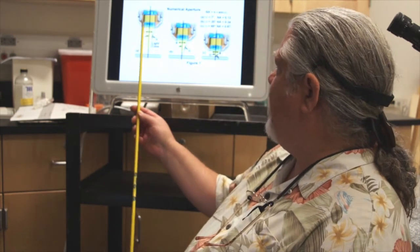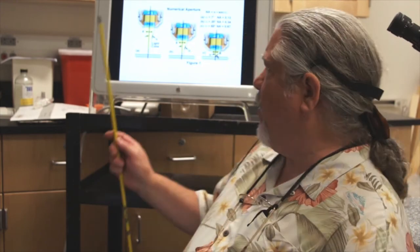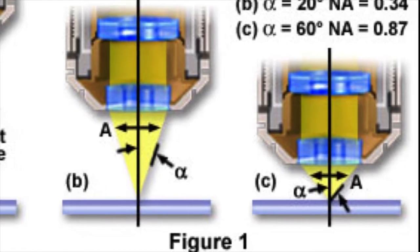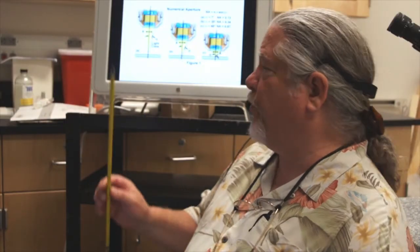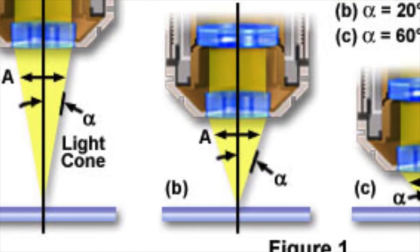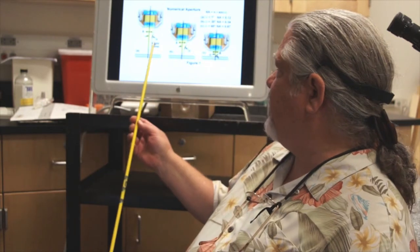Here we have three different objectives displayed on the screen. These are all the same magnification objective, but they all have improving numerical aperture. Notice that as the numerical aperture of the objective improves, the working distance is decreased. When you're working with a very high NA, high numerical aperture objective, your working distance is going to be markedly reduced.